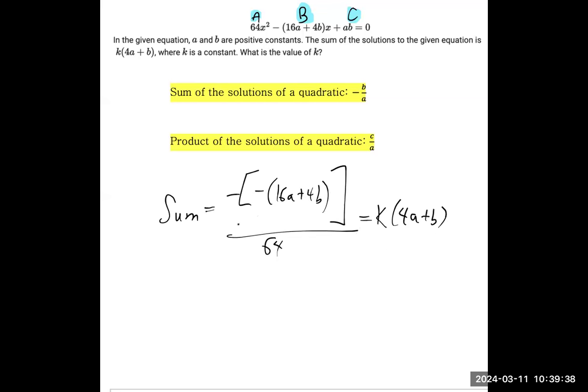Now we can start carefully taking this apart. First of all, we have that double negative that becomes a positive, so we have 16A plus 4B all over 64 equals K times 4A plus B. And in the numerator, there is a GCF - there's a common factor of 4 for the 16A and 4B. So if we take out 4, it leaves us with 4A plus B over 64.